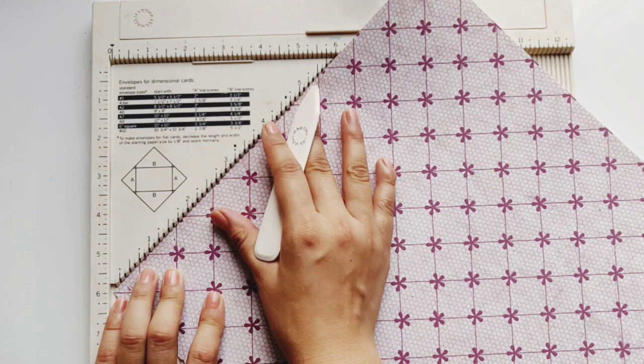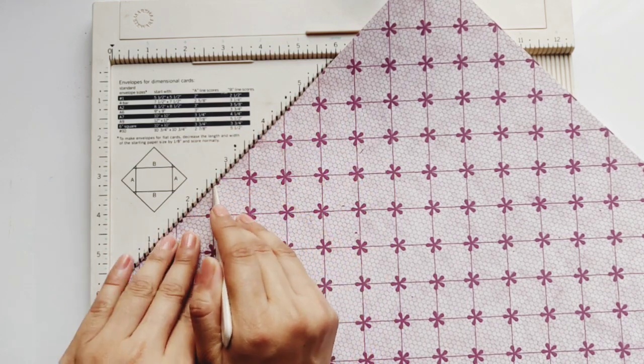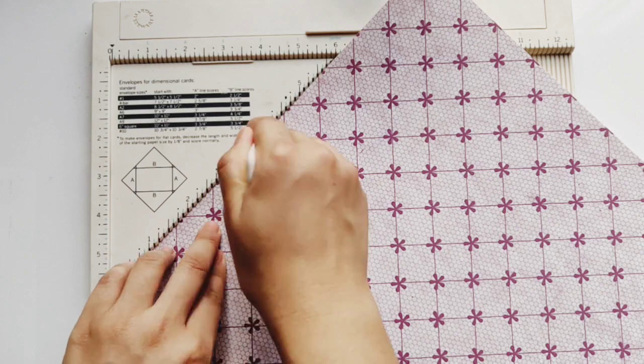So it has these A lines, B lines that you can use as guidelines for scoring using different sizes of paper.